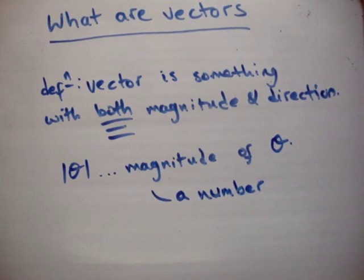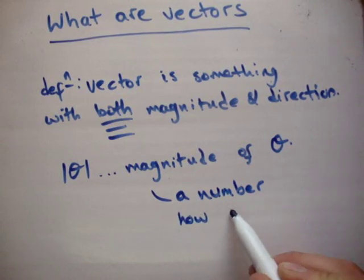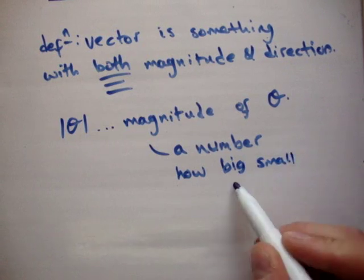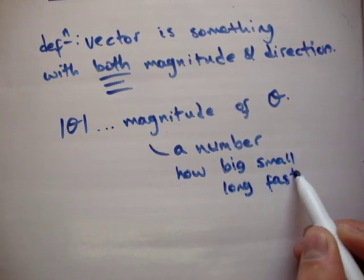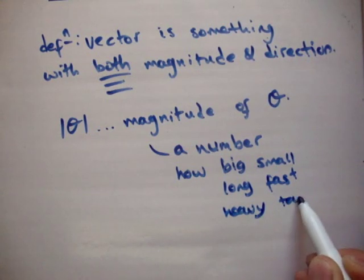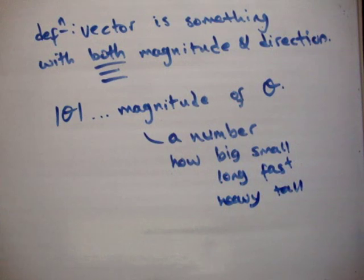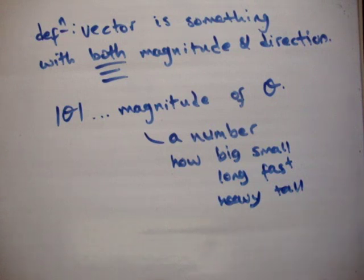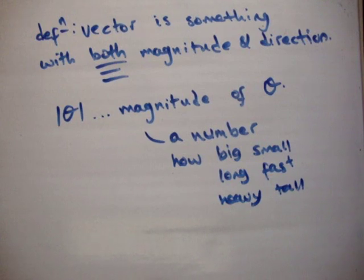What does magnitude mean? Magnitude is a number. It could be how big, small, long, fast, heavy, tall. Any of those sorts of things. They will all have a number associated. How big is it? You're 1.7 meters tall. How small is it? It is 1 nanometer small. How long is it? It's 1 meter in length. How fast is it? It's moving at 10 meters per second. How heavy is it? It is 4 stone heavy. So, it's something where you can put a number onto it.